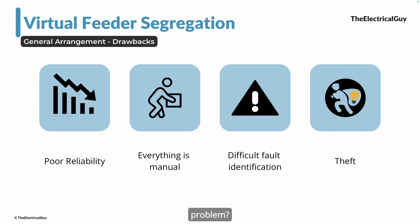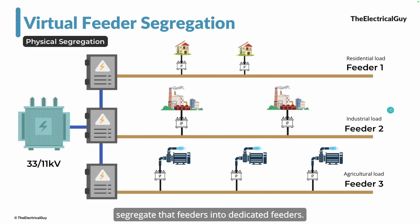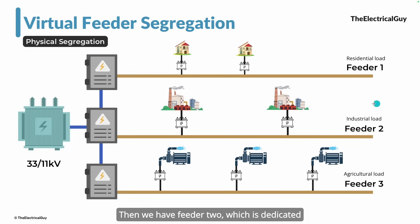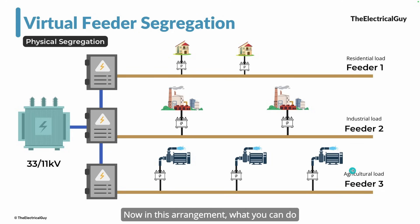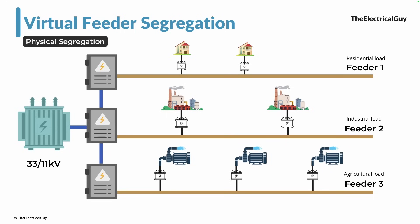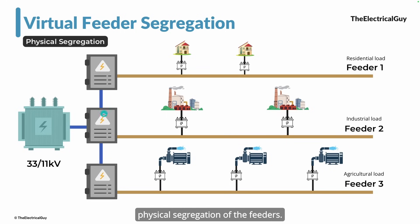The straightforward solution is to segregate the feeder into dedicated feeders. We have the same 33/11 kV transformer, but we connect three separate vacuum circuit breakers: feeder one dedicated for residential load, feeder two for industrial load, and feeder three for agricultural load. After 4 to 5 hours, if you wish to disconnect the agricultural load, simply open that circuit breaker and the other loads keep running 24/7 without any problem. This is what we call physical segregation of feeders.